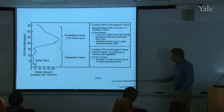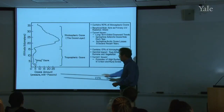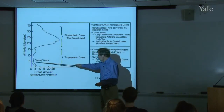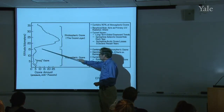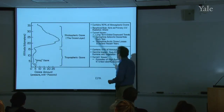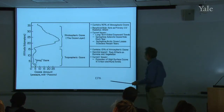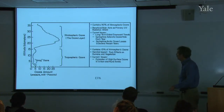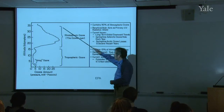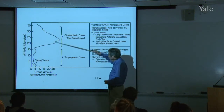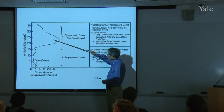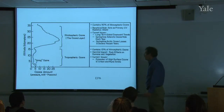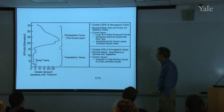I showed this diagram last time as we discussed this part of the ozone issue, but now we're going to talk about the ozone layer. As it says here, it contains 90% of the atmospheric ozone. If you do a column integration from the top of the atmosphere to the bottom, most of the contribution comes from the ozone layer.